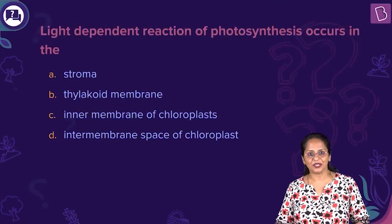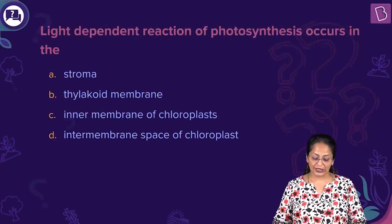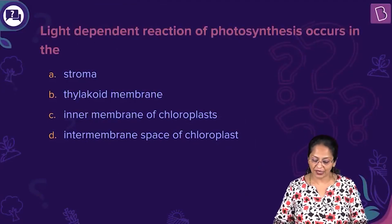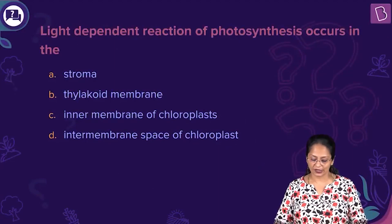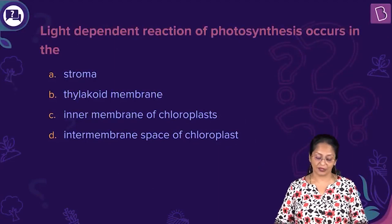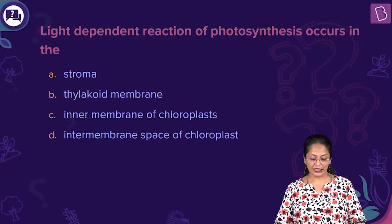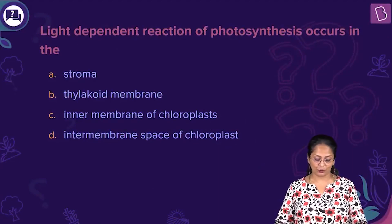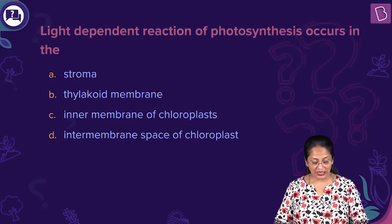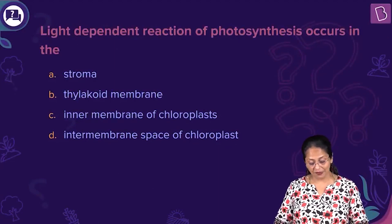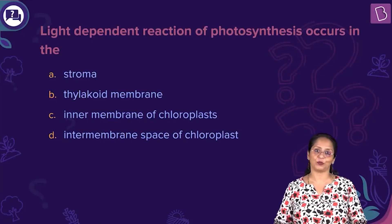A new question for you: light-dependent reaction of photosynthesis occurs in the stroma, thylakoid membrane, inner membrane of chloroplast, or the intermembrane space of chloroplast?